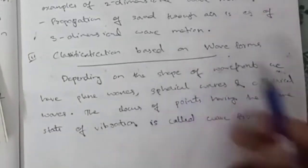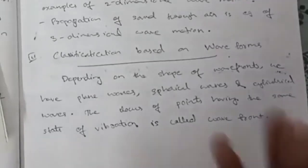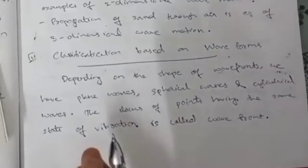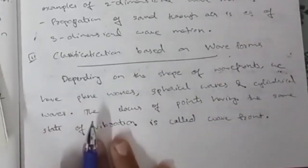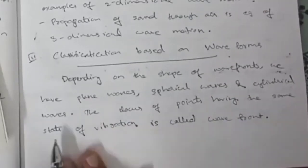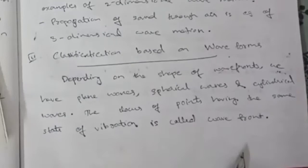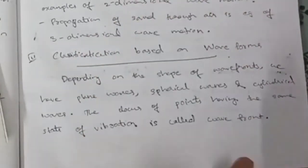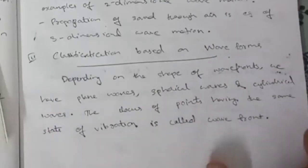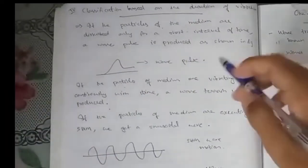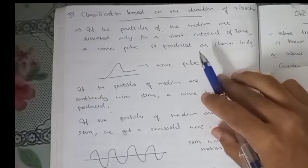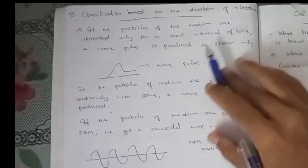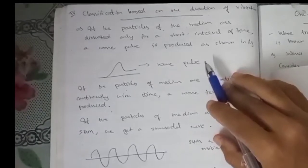There is also a classification based on waveforms. The locus of points having the same state of vibration is called a wavefront. Another classification is based on the duration of vibration.